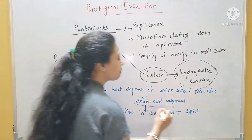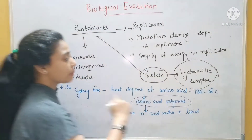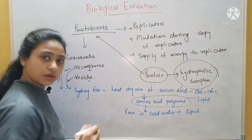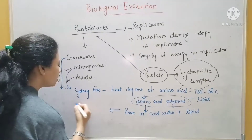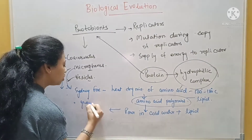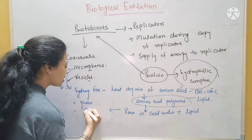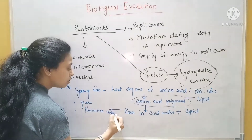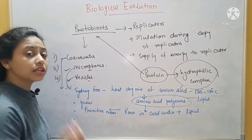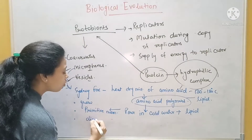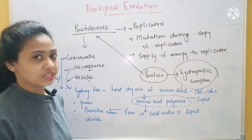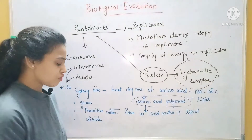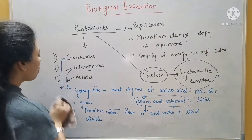So what happened? The amino acid polymers formed a membrane — a lipid membrane. Now they were able to show growth. They had a primitive membrane, which was necessary. And the third thing: they were able to divide and they were showing replication. So in this case it became a more advanced form.